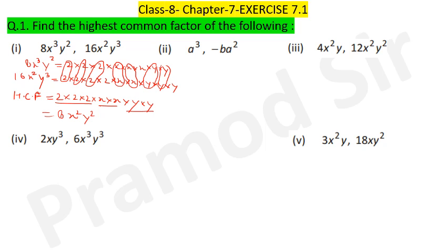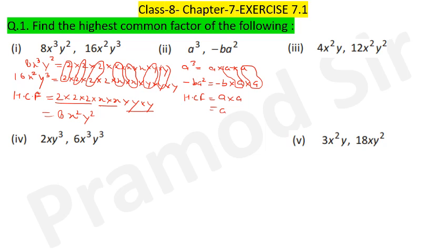Same approach here: a³ = a×a×a and -ba² = -b×a×a (two times). HCF equals a×a, that means a². Same method for question number 3.